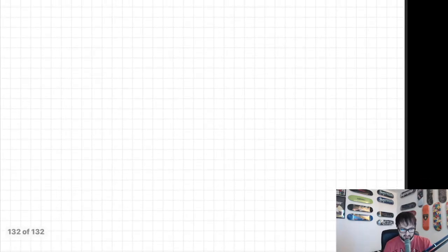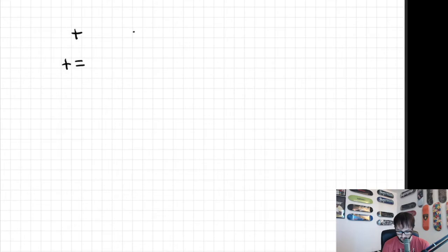And every single operator in C++, well, the five arithmetic operators, have a compound assignment statement that correspond to it. So for plus, that one looks like this. For minus, it looks like this. For times, it looks like this. Divide, and modulus.